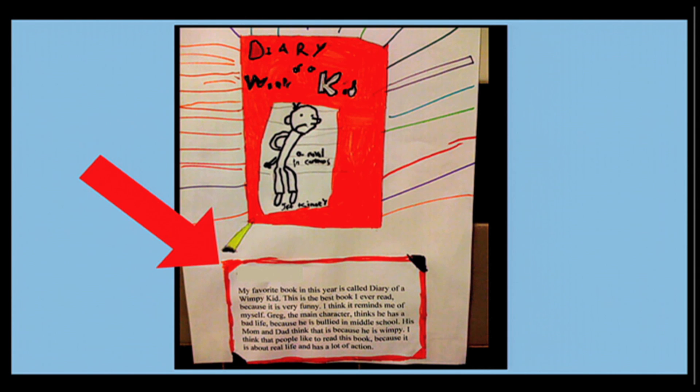So you can see in this assignment, what the kids did was at the top, they had to, I think, make their own book cover. So that's what the top part of it was. So they drew their own book cover. Then down at the bottom, they had to write their assignment.